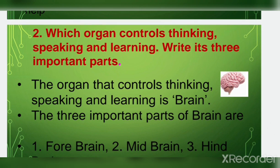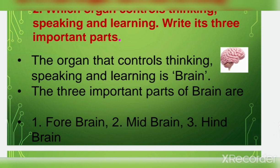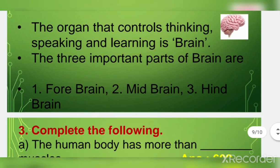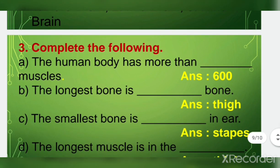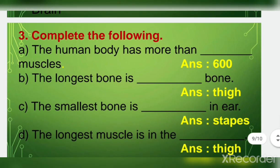Which organ controls thinking, speaking, and learning? The organ that controls thinking, speaking, and learning is the brain. The forebrain, midbrain, and hindbrain are the three important parts of the brain.